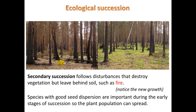Let's take a look at secondary succession. This is when only the vegetation is lost — the soil remains. Fire is a good example of a disturbance that would precede secondary succession. Here we see the trunks of these trees charred from a fire, and a little while later we're starting to get new growth. Species with good seed dispersion are important during the early stages of succession so the plant population can spread.